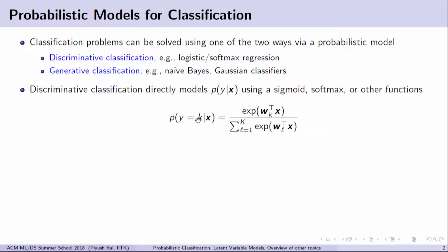With every class k, you have a weight vector w_k. This definition tells us that the probability that the label is k is proportional to the score that data point x gets under the k-th class. You exponentiate and normalize, so this is a valid probability: if you sum this score over all values of k from 1 to K, it sums to 1.